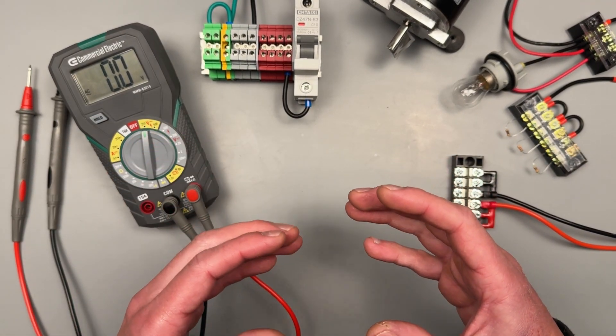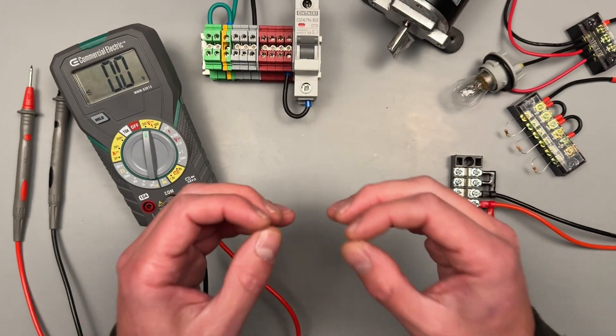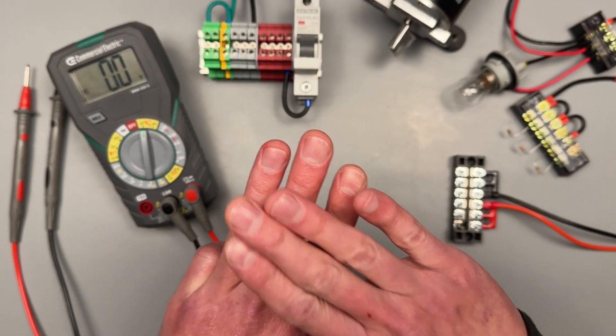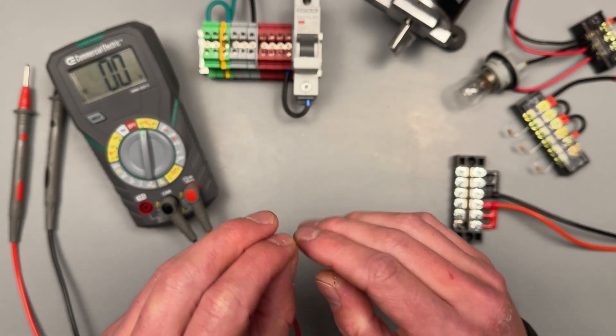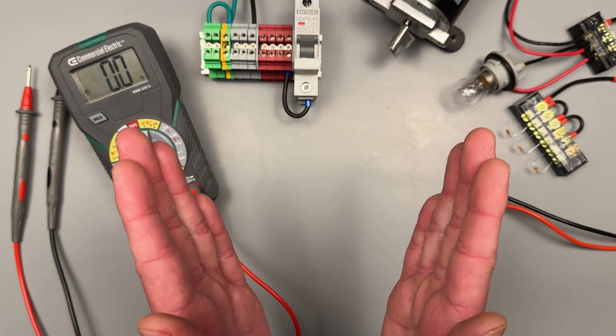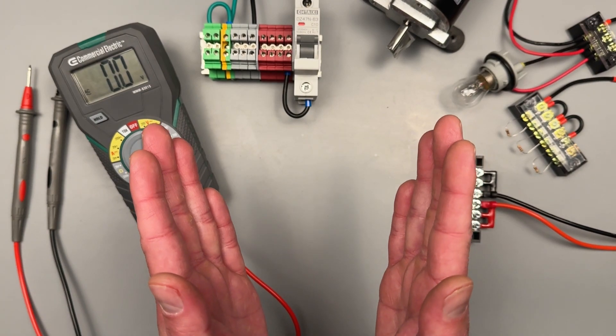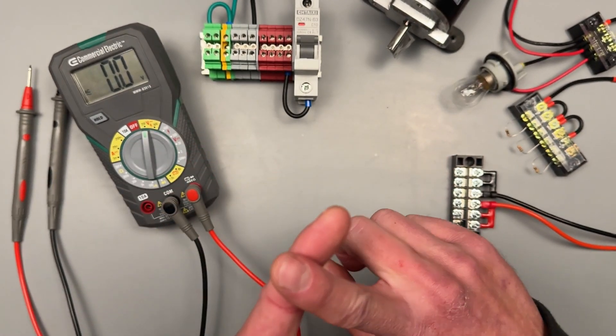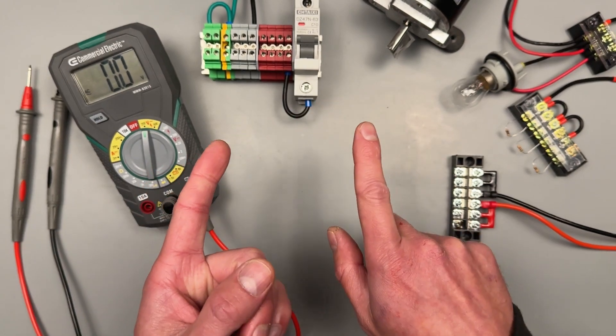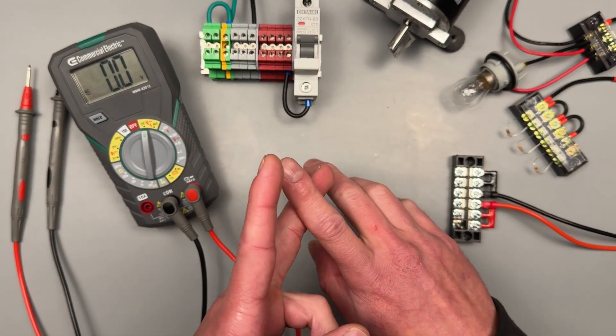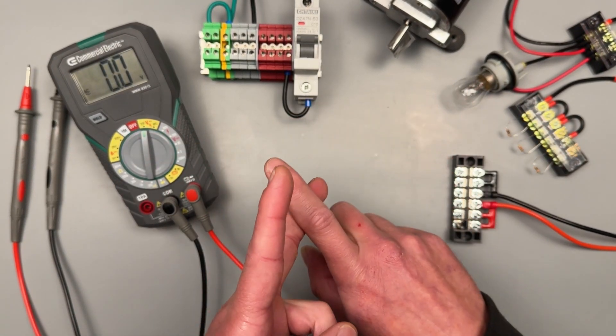There are going to be three main types of measurements we're going to focus on that are going to be a range of values. The first is going to be voltage, and voltage can be broken down into AC or DC. We're going to be looking at current - your meter will measure also AC or DC current. And then there's going to be resistance.